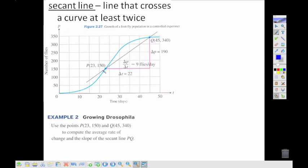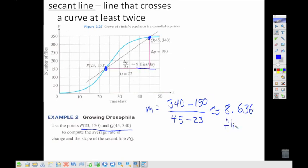Now we might be using this secant line to estimate the rate of change at a given point. So in this one, we're using these two points to compute the average rate of change over this time. This would simply be a matter of taking my endpoints, 340 minus 150 over our change in X's. And that's going to be about 8.636. Note that they rounded that to 9 flies per day because our units of Y are flies, our X-axis is days, so we're thinking flies per day.